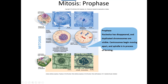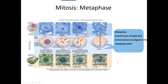In metaphase, the chromosomes have aligned themselves along the middle of the cell. The spindle fibers have attached to the chromosomes right at the centromere, and through the pushing and pulling from each side, they align the chromosomes right down the middle of the cell. Metaphase is when all the chromosomes have met in the middle.